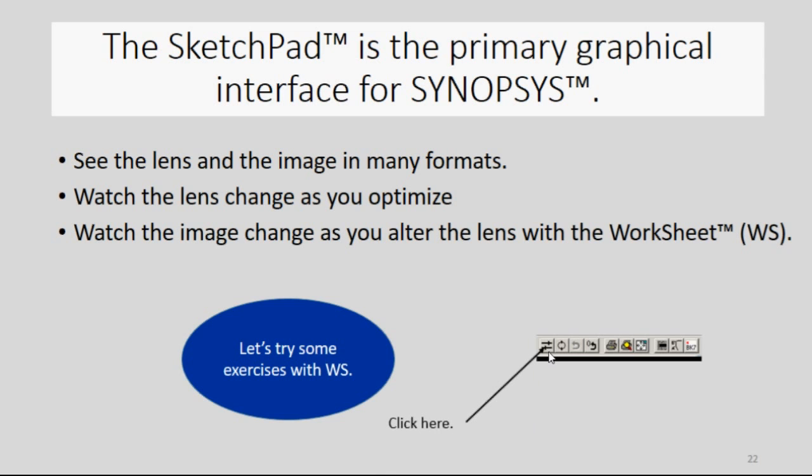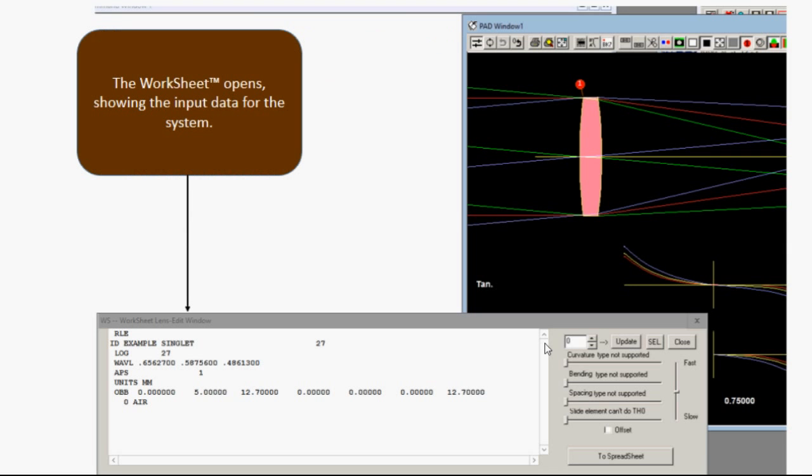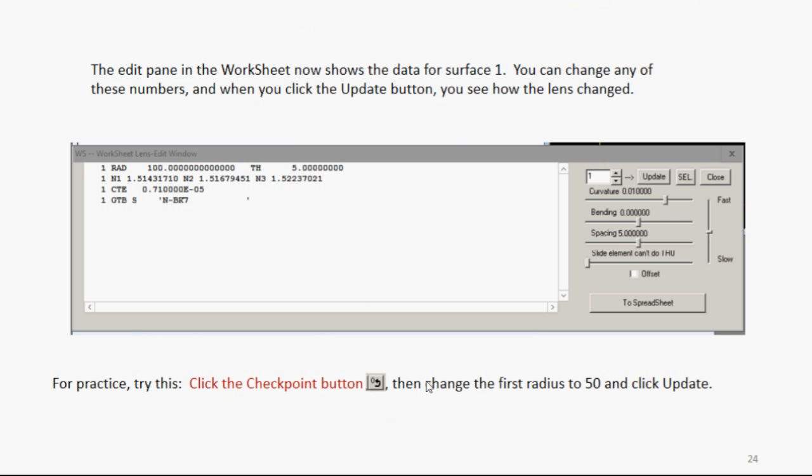In the PAD toolbar, you'll see some buttons. So you click there, that's the worksheet button. The worksheet opens, showing the input data for the system. Now you want to click on Surface 1 in the PAD display. And when you do that, the Edit pane shows the input data for Surface 1. And you can change any of these numbers. And when you click the Update button, you see how the lens changed.